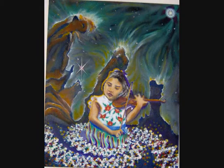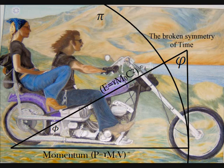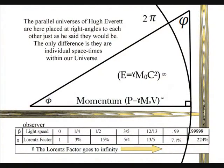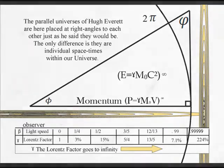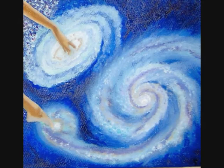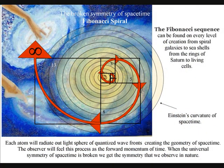This theory might be wrong. I have found little evidence of the law of the conservation of time. But light has momentum, and momentum is governed by the law of the conservation of energy, and for this to work there must also be a law of the conservation of time. In this theory, the parallel universes of Hugh Everett are here placed at right angles to each other, just as he said they would be. The only difference is they are individual space-times within our own universe. The existence of other space-times makes it possible to remove the randomness and action at a distance from quantum theory, and thus from all physics.